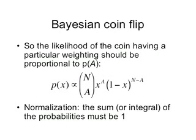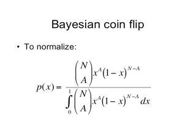Here's the key leap in logic: the likelihood of the coin having a particular weighting should be proportional to how often that weighting produces a heads on n flips. So p(x) is proportional to our expression for p(a). This is exactly analogous to the probability for each box being proportional to the number of yellow circles in that box. But this is just a proportionality — if we want an equation, we have to normalize. We divide this expression by the integral over all possible weightings from 0 to 1, so that the integral of all probabilities equals 1. We can cancel out the n choose a coefficient for a slightly simpler expression.